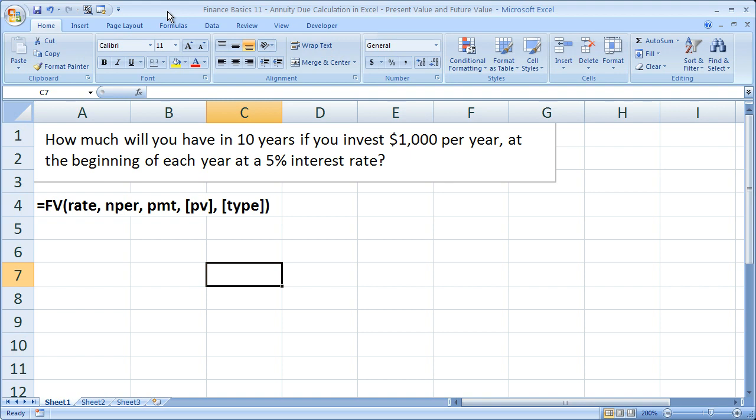Now all an annuity due means is that the payments come at the beginning of the year. By default, everything is calculated as if they came at the end of the year. All we're doing here is changing them from the end of the year to the beginning of the year.